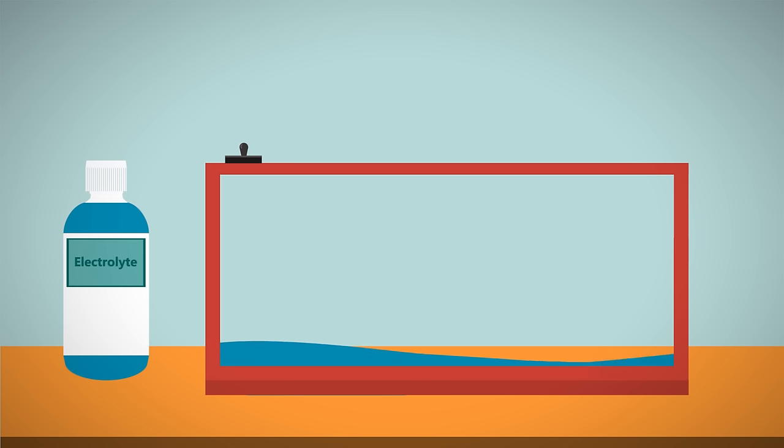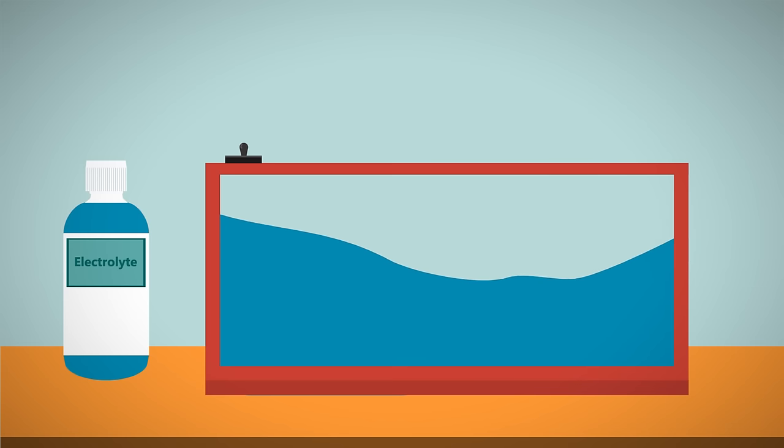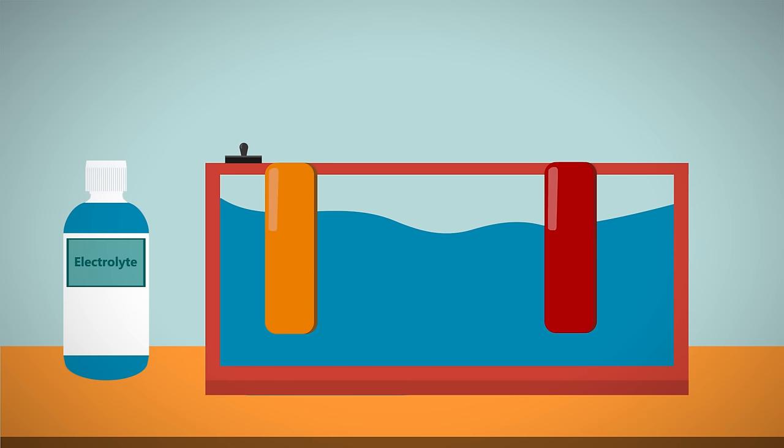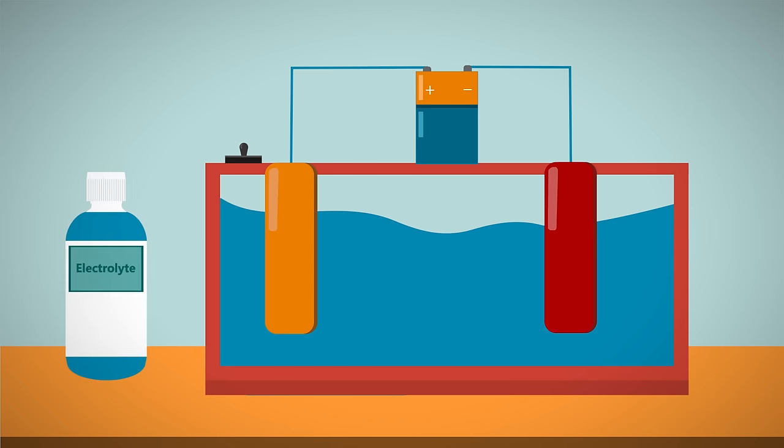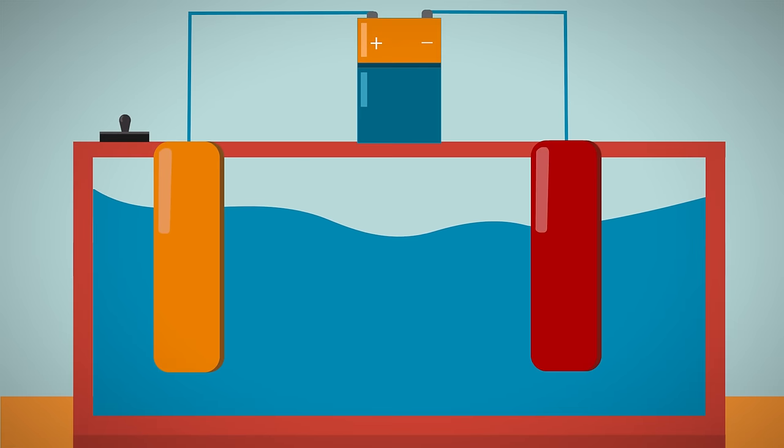So how does electroplating work? An electric current is passed through a solution that conducts electricity, called an electrolyte. To create this current, two electrodes are dipped into the electrolyte solution and connected to a battery or power supply. So we end up with a setup that looks something like this.